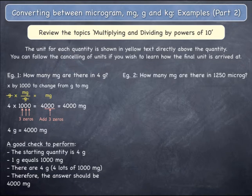Example 2. How many milligrams are there in 1,250 micrograms? Since you are changing from micrograms to milligrams, you must divide the starting quantity by 1,000.